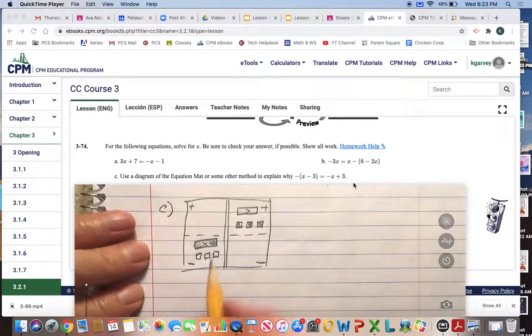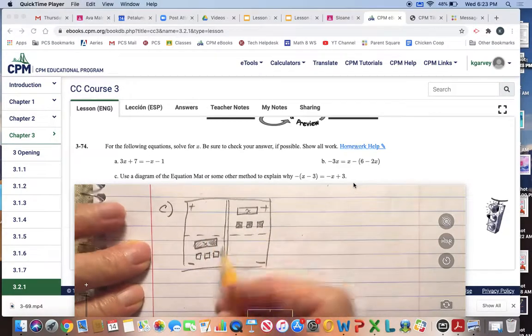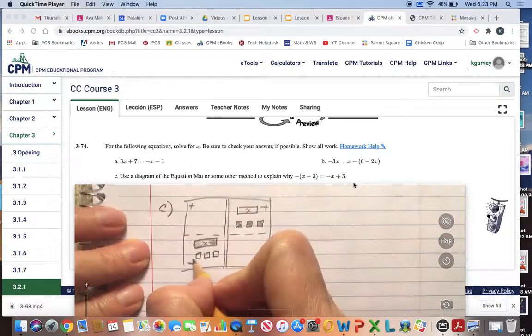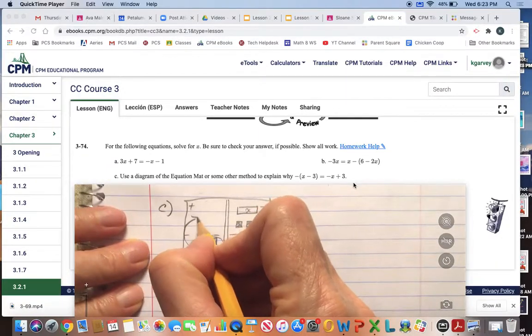The way to demonstrate that this side is equal to this side is to show that if we grab all these and flip them up here.